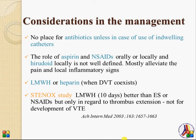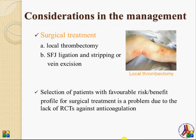Low molecular weight heparin is indicated when deep venous thrombosis coexists. Studies have shown that for a certain period, low molecular weight heparin may be better than elastic stockings or non-steroidal anti-inflammatory drugs, as demonstrated in the STENOX study. Regarding surgical treatment, local thrombectomy can alleviate local inflammatory signs. SFJ ligation, stripping, or vein excision have been used, but evidence to select patients who will benefit from surgery over anticoagulation is currently lacking.